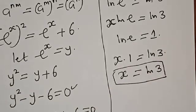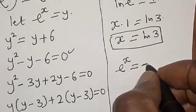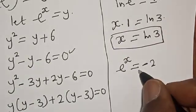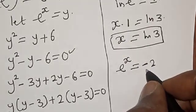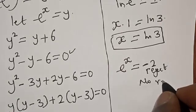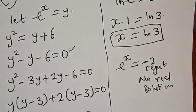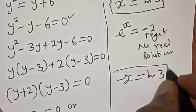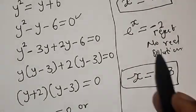From the other solution, e raised to power s equals negative 2. However, e raised to power s is always a real positive number, so it cannot equal a negative value. We therefore reject this solution and conclude there is no real solution from this case. The only real solution is s equals natural log of 3. If you enjoyed the class, please don't forget to like, share, comment, and subscribe. Thank you.